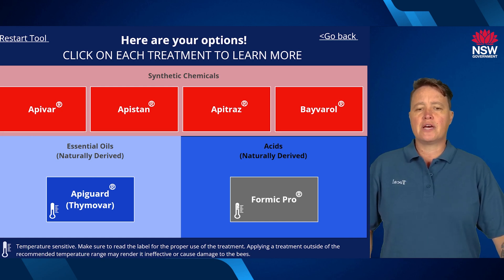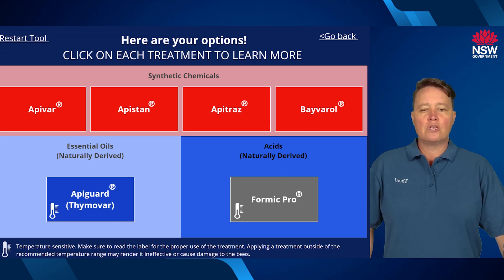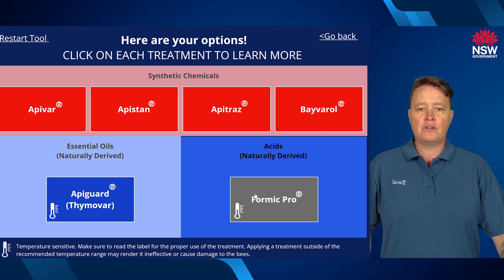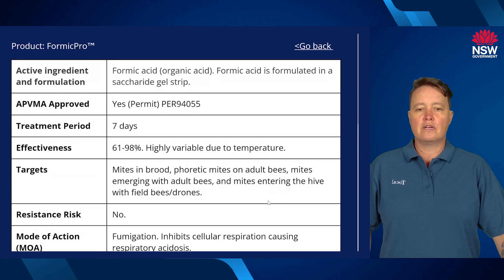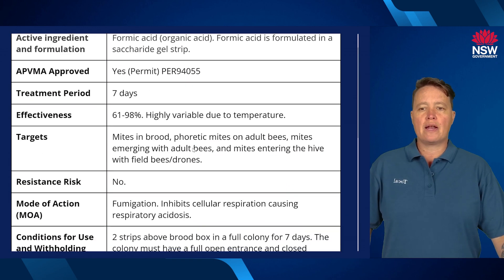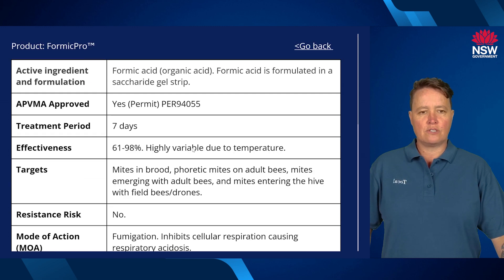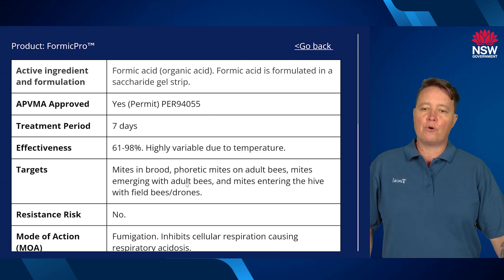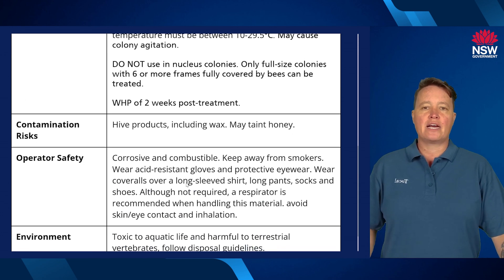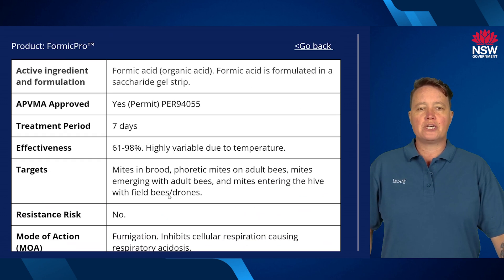You'll notice that both Formic Pro and Apiguard have a little thermometer icon next to them. Looking at the legend at the bottom, that means those products are temperature sensitive, so you'll need to check the product information. You can click on the actual product and it will take you to an information page about that particular product. For example, Formic Pro tells you the active ingredient, the current permit, the treatment period, how it works in the hive, mode of action, and more — so you can be fully informed when using that product.